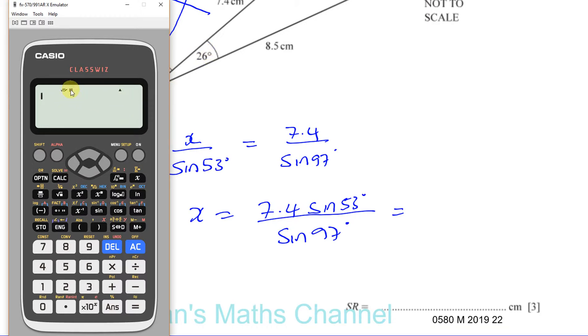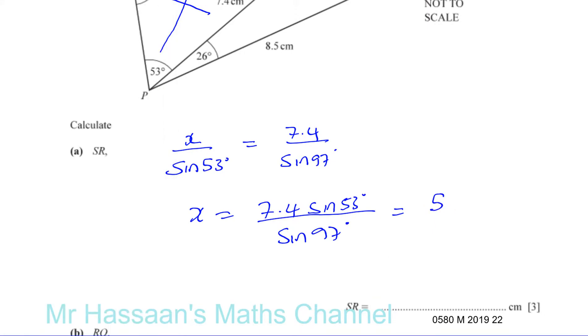So it's in degree mode, so we're fine. So I can just say 7.4 times the sine of 53, divided by the sine of 97. So that gives us 5.95428, it continues on. I haven't rounded it, just written dot dot to show it continues on.